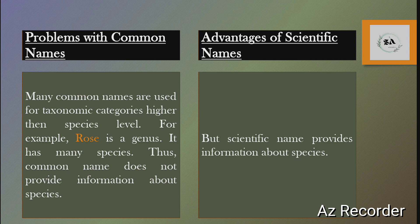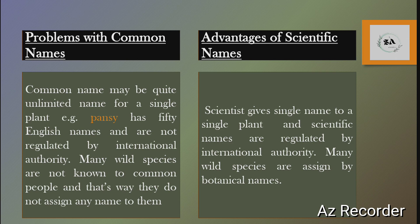For example, variety, form, etc. The next problem with the common name is that a single plant may have quite unlimited common names. For example, pansy has 50 English names, and these 50 names are not regulated by any international authority. It is very difficult for a person to remember 50 English names for a single plant. Many wild species are not known to common people, so they are not assigned any name. But scientists give a single name to each plant, and these botanical names are regulated by the international authority, that is the International Code of Botanical Nomenclature. Many wild species are also assigned botanical names.